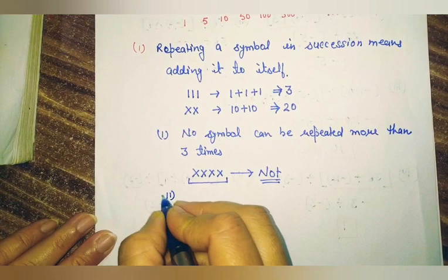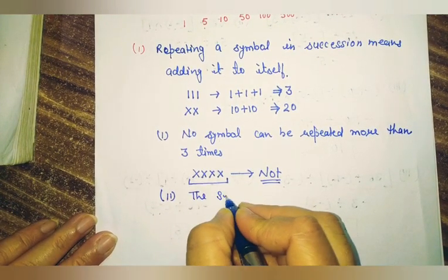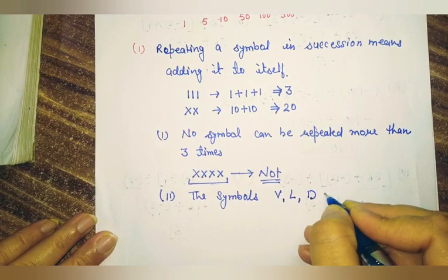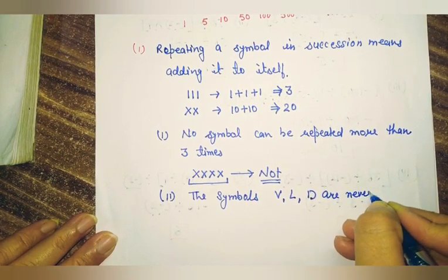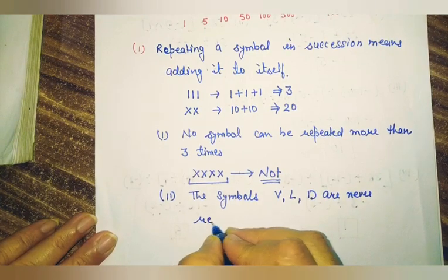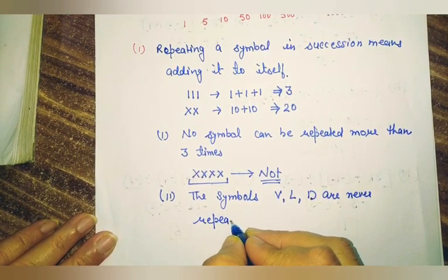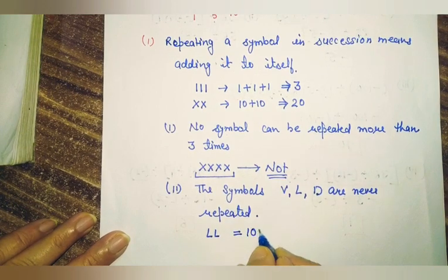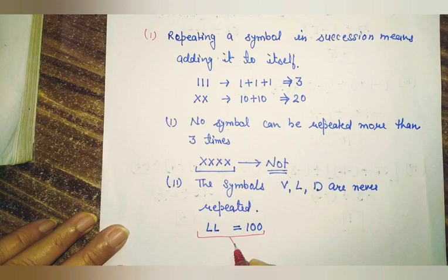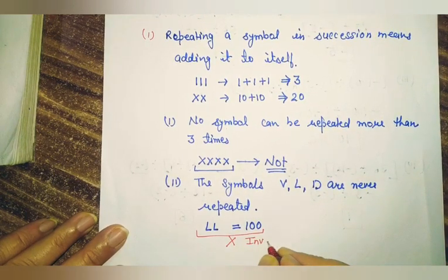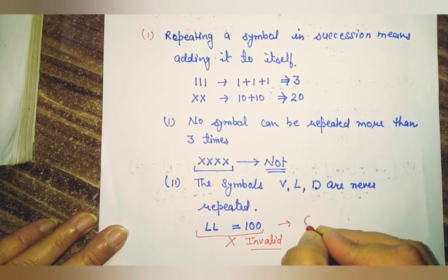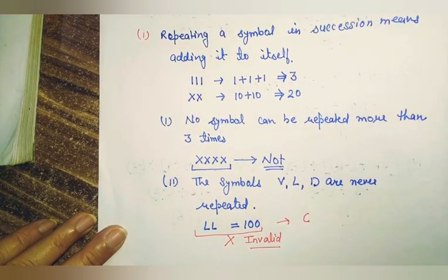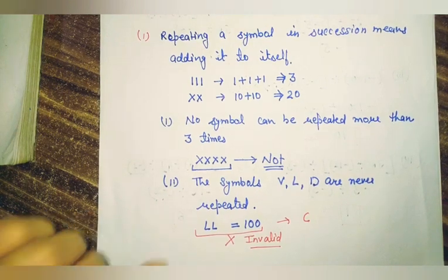The second rule: the symbols V, L, and D are never repeated. We have to remember this — V, L, and D are never repeated. That means if we repeat L to write 100, that method is invalid and wrong. To write 100, we use C. So writing a numeral using repeated V, L, or D is an invalid method and those numbers are not valid Roman numerals.